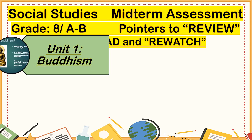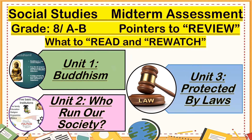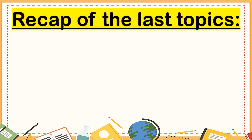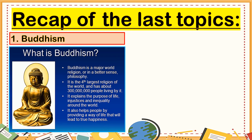What are you going to read and what are you going to rewatch? Unit 1, Buddhism. Unit 2, Who Runs Our Society. And Unit 3, Protected by Laws. Before we proceed with our review today, let's have a short recap of the last topics. Buddhism is a major religion, or in a better sense, philosophy. It is the fourth largest religion of the world and has about 300 million people living by it. It explains the purpose of life, injustices, and inequality around the world. It also helps people by providing a way of life that will lead to true happiness.